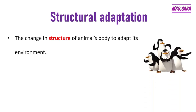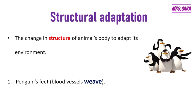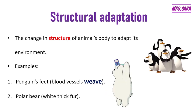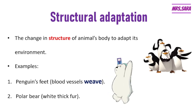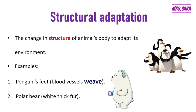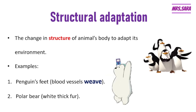Our first example is the penguin feet. The penguin feet has blood vessels that weave around each other, which allows the penguin to walk on the ice or the snow. The second example for structural adaptation is the polar bear, which has white scales that allow its body to stay warm in the polar climate.